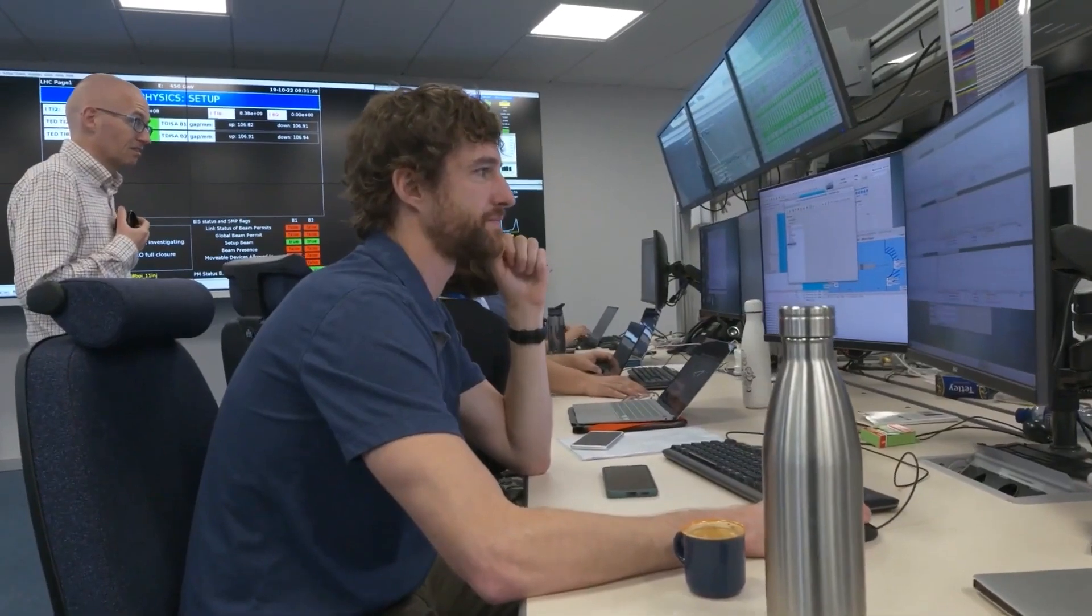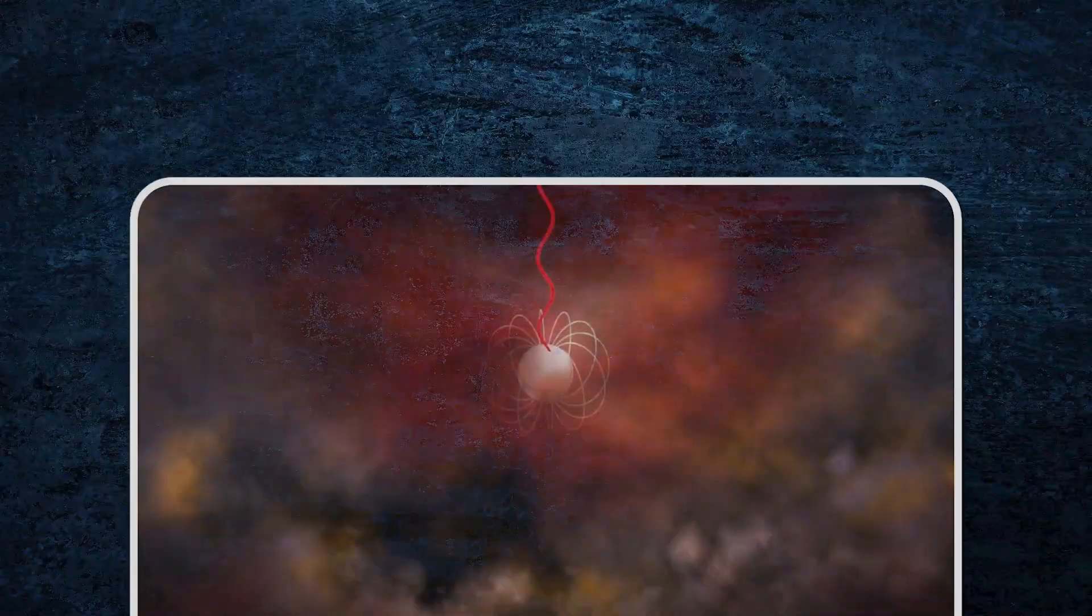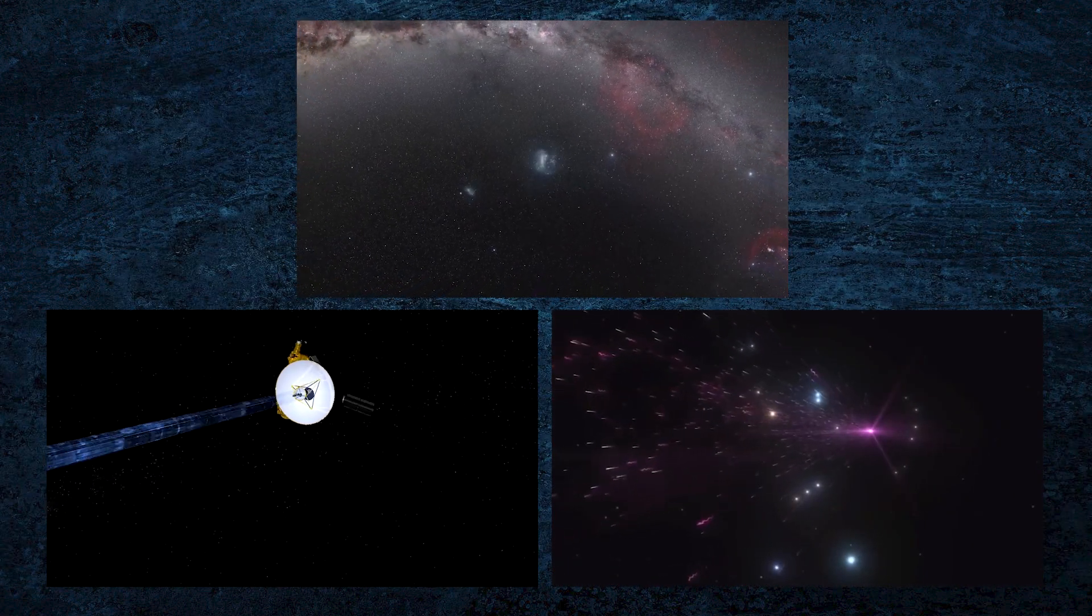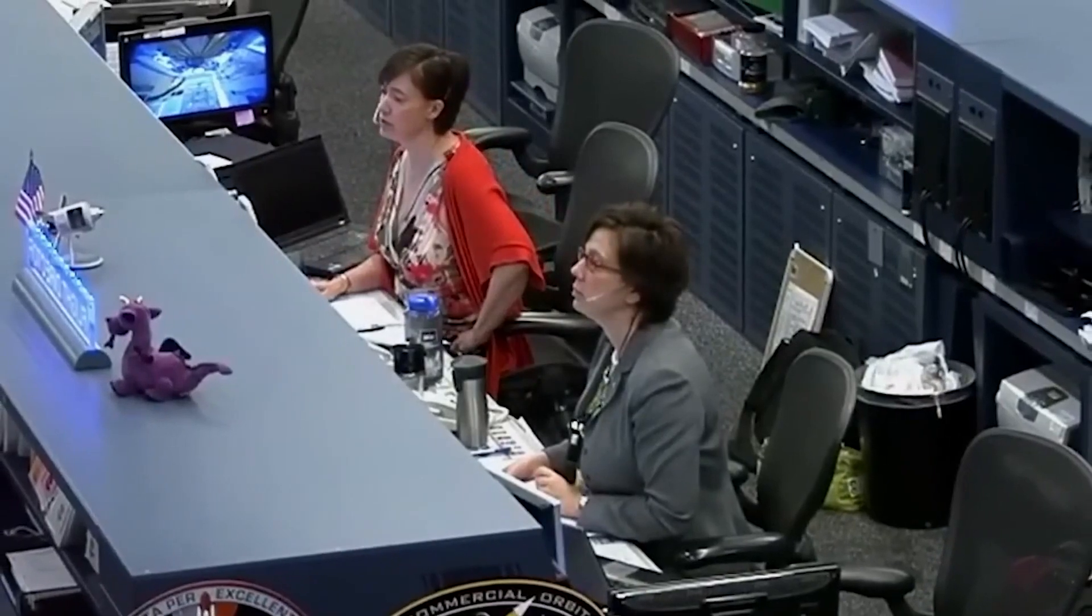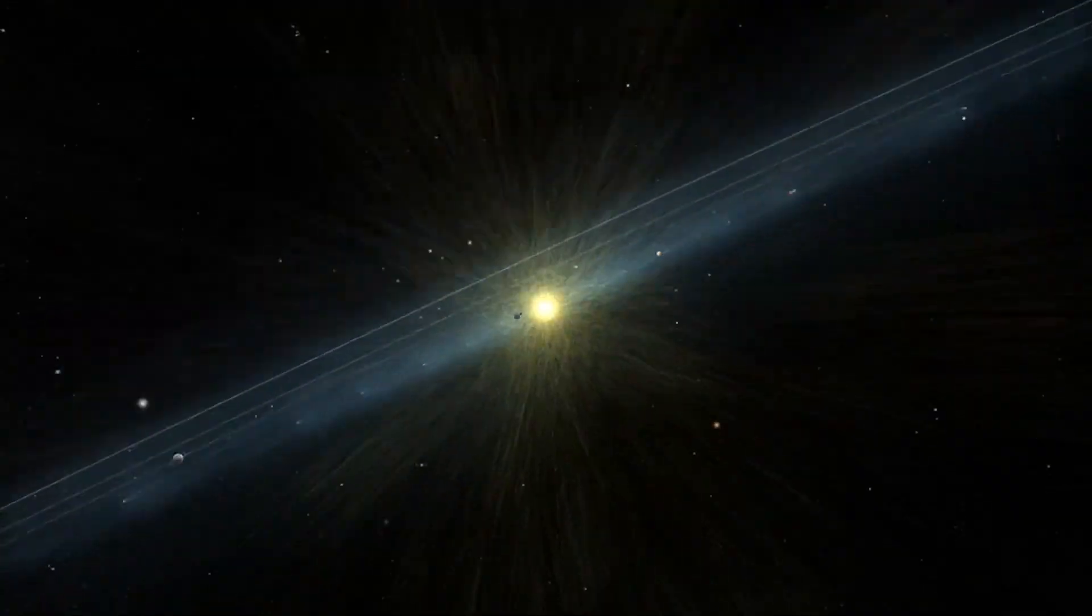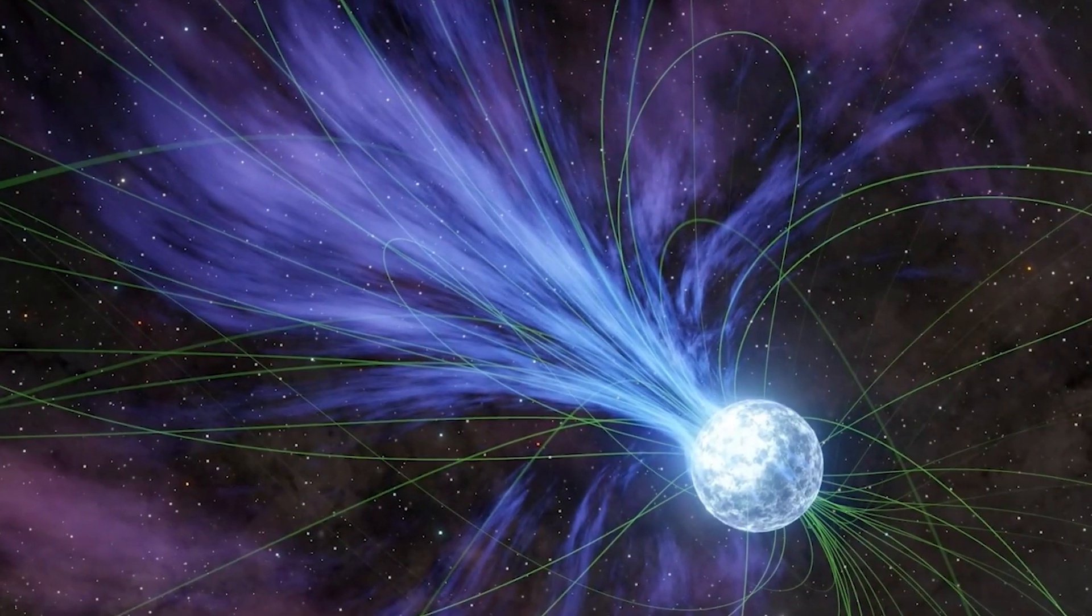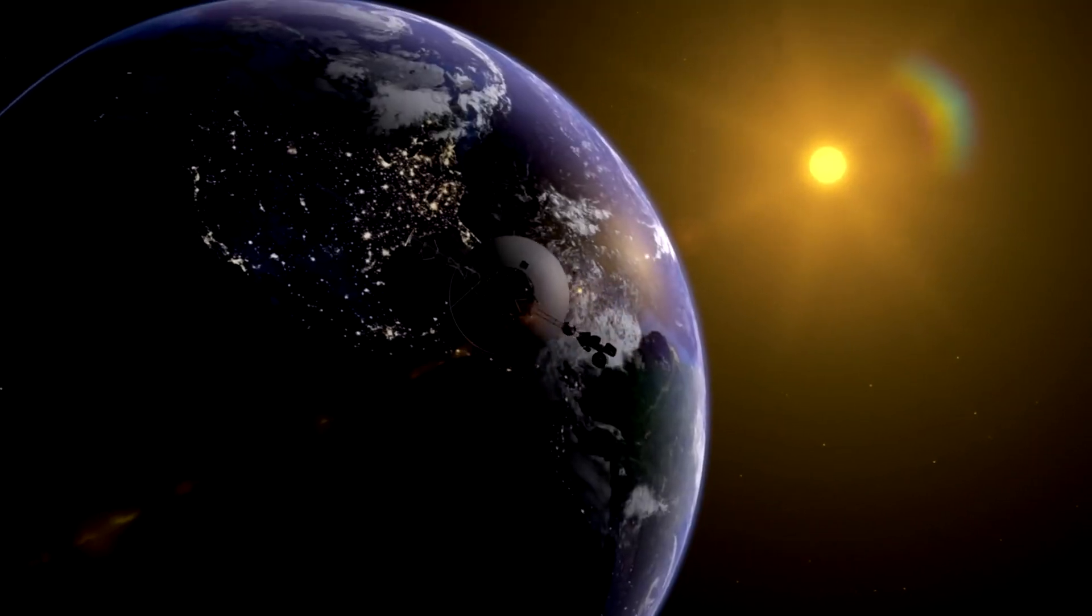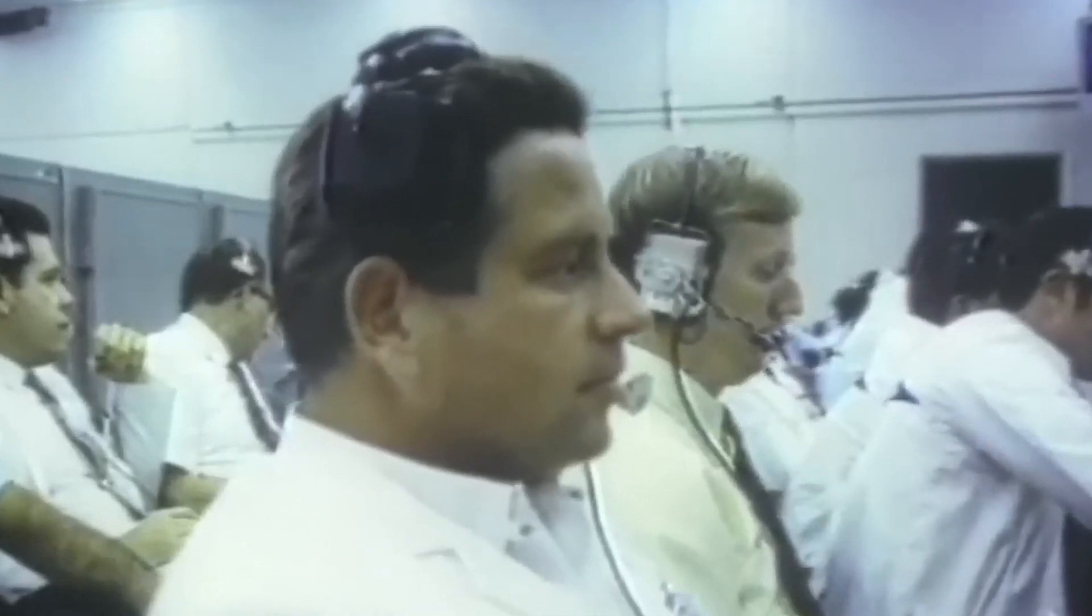When Voyager 1 crossed it in 2012, scientists expected a sudden change - more energetic particles from exploded stars, a shift in magnetic fields, and clear proof it had entered interstellar space. But that's not what happened. Instead, there was an unexpected surge in plasma density, but the magnetic field barely changed. That was a huge red flag. Scientists had always thought the interstellar magnetic field would be different from the sun's magnetic field, but it wasn't. It stayed almost the same. This left everyone scratching their heads.